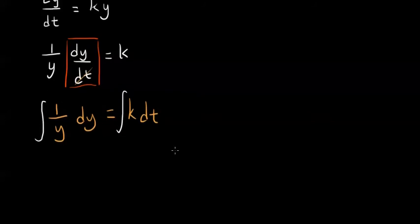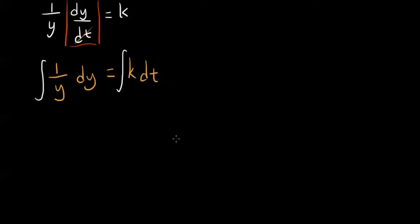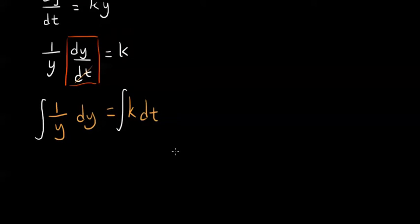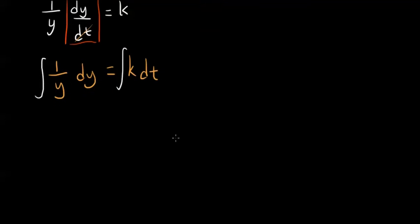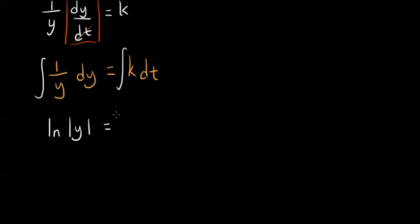We integrate 1 over y dy and integrate k dt. The integral of 1 over y dy is the natural log of the absolute value of y. The integral of k dt is kt plus some constant, let's call this c sub 1.